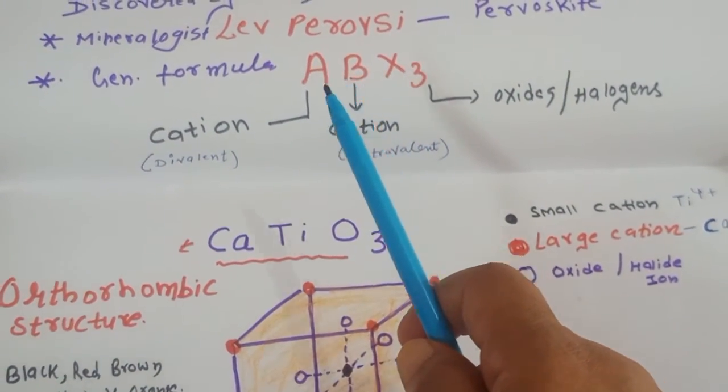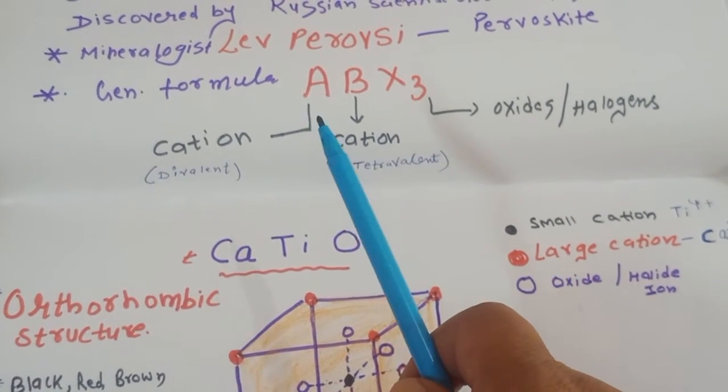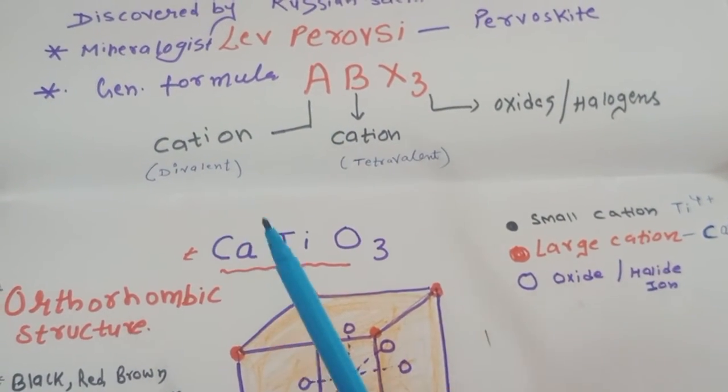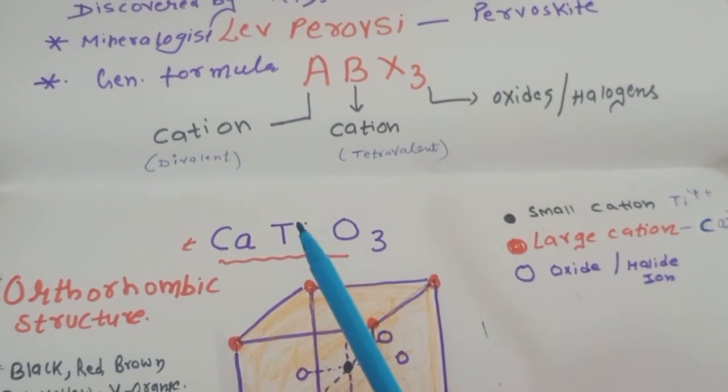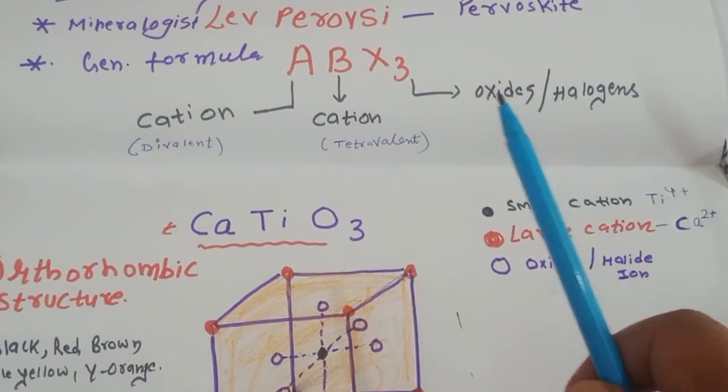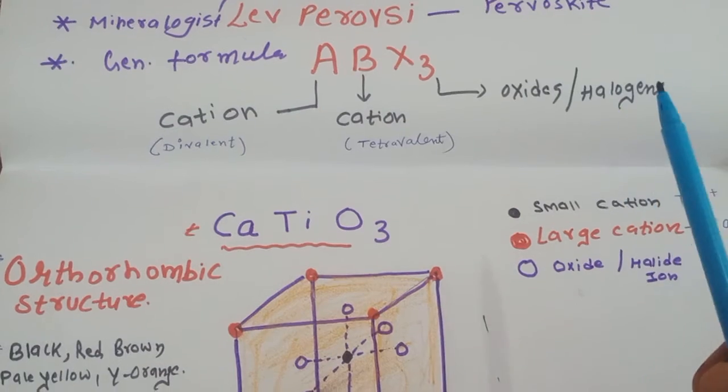So our other will be oxide ions or the halide. Means this general formula is ABX3, so A and B are the cations. A will have the divalent 2+, B will have the 4+, and our X can either be oxide or the halogen.